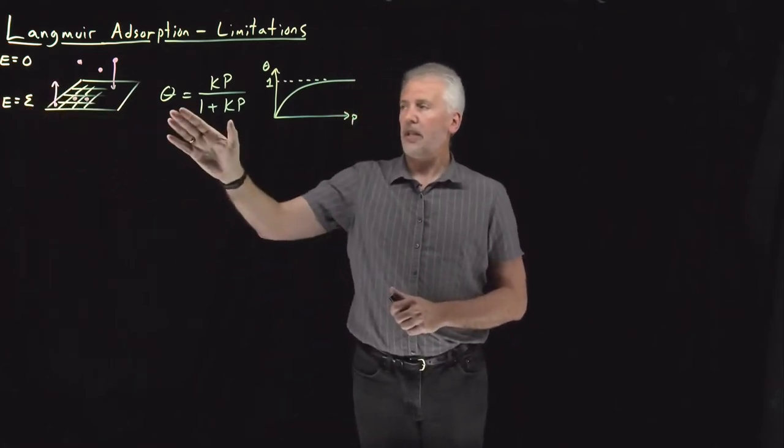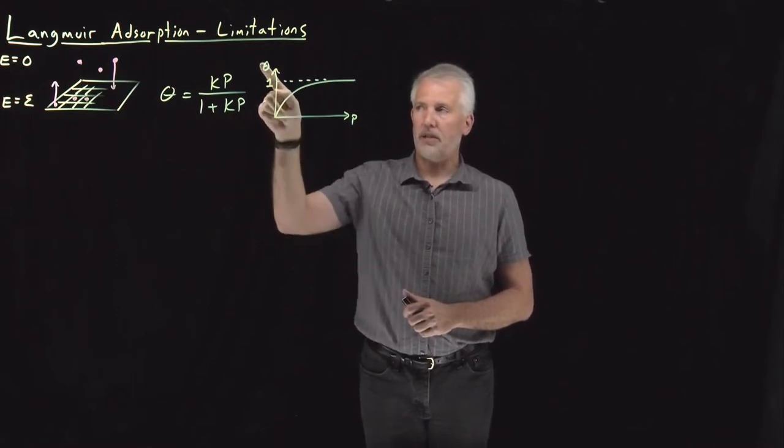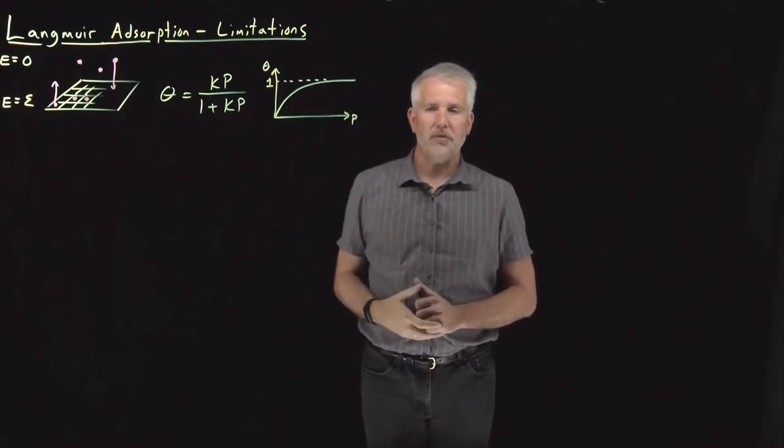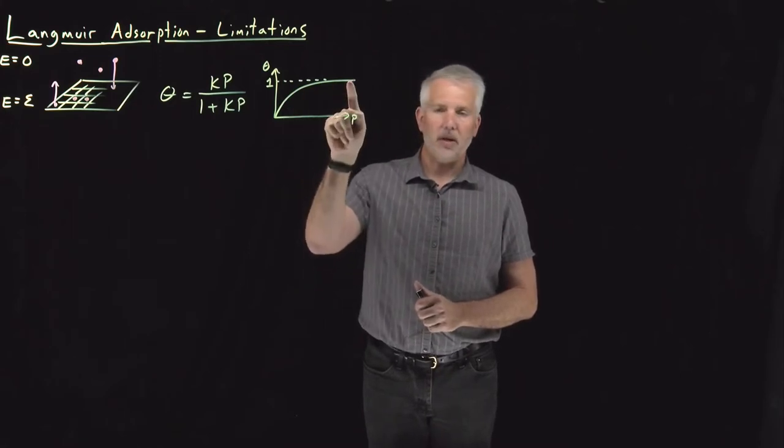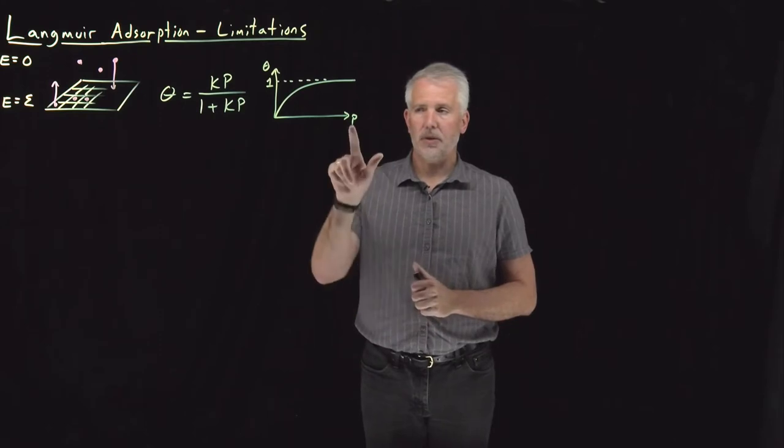That model leads to this Langmuir isotherm, which tells us that the surface coverage will increase as a function of pressure, saturating at a monolayer coverage, covering one full layer on the surface when the pressure gets large.